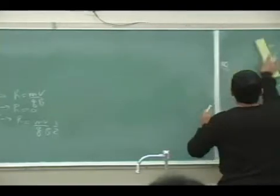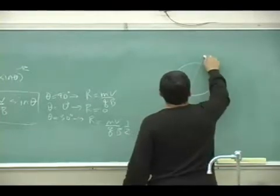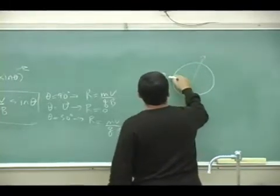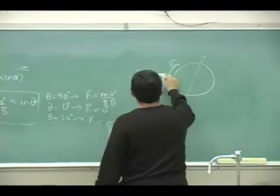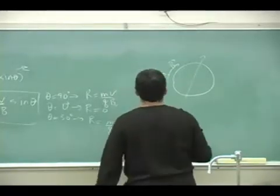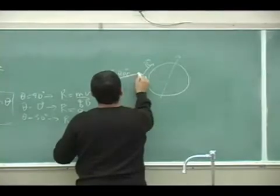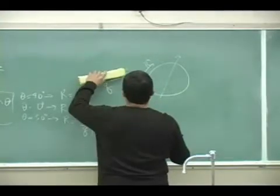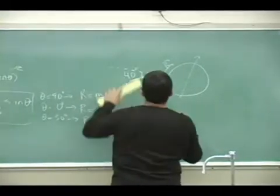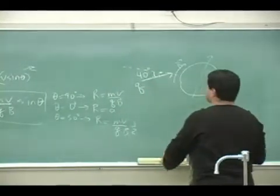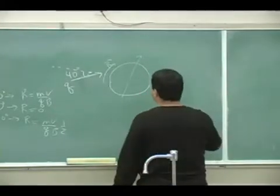So going back to that Earth example, let's say some charge comes in like this, and then the B is like that, 40 degrees. So let's say it's the proton again. So now calculate the radius, and we don't have to redo everything, but if it's coming in at 40 degrees from the vertical.